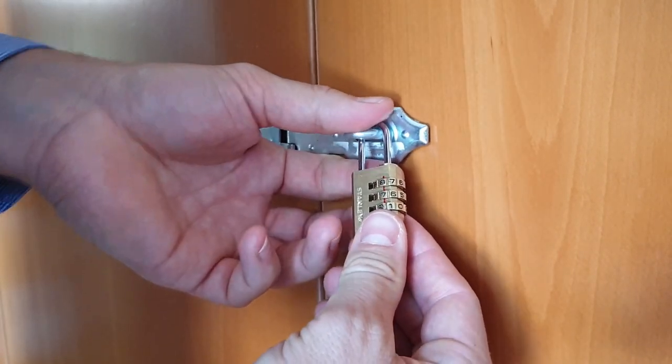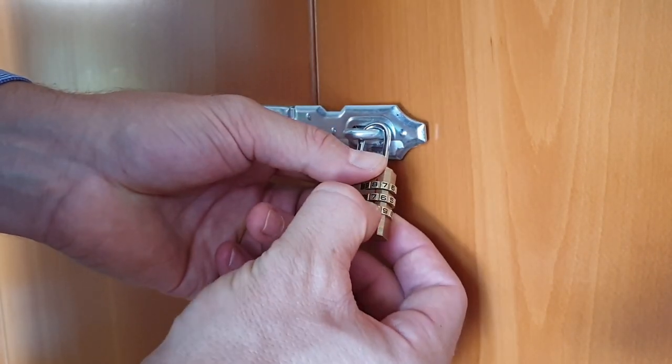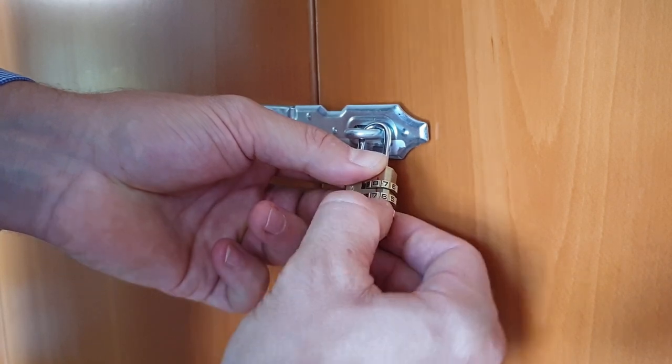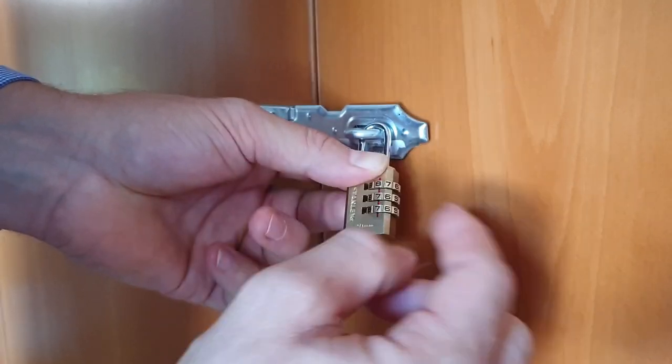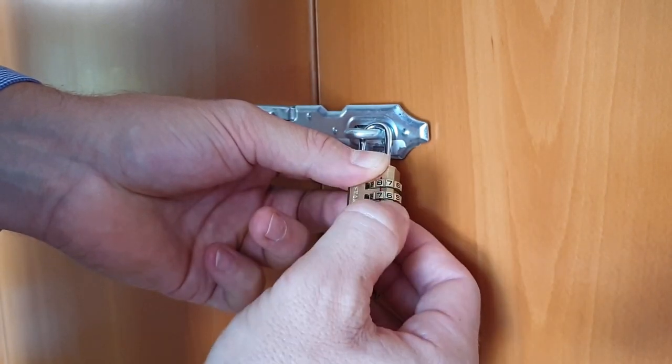But I will release the pressure and go on to another number and see again if it is only that number that's hard to rotate on. Now I put pressure on the lock body again.